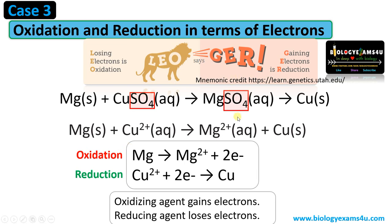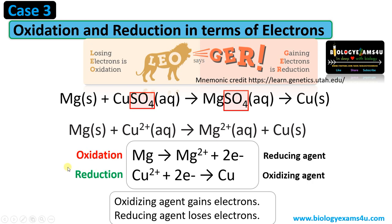Now regarding oxidizing and reducing agent: here Cu²⁺ is the oxidizing agent as it gains electrons, whereas the reducing agent loses electrons. To summarize: magnesium donates electrons and becomes Mg²⁺, whereas Cu²⁺ receives electrons and becomes Cu. Losing electrons is the oxidation reaction, whereas gaining electrons is the reduction reaction. Hope you are clear with oxidation-reduction reactions.